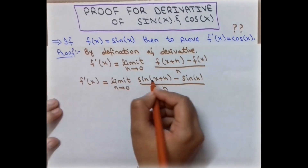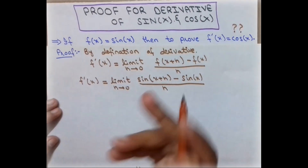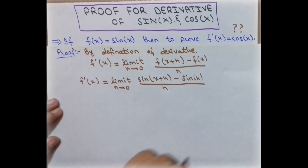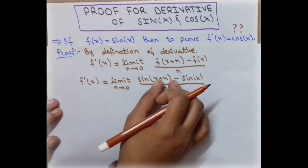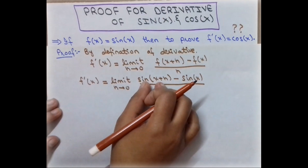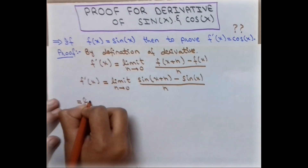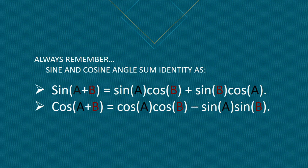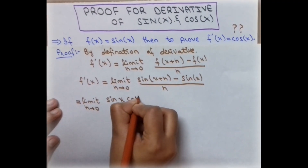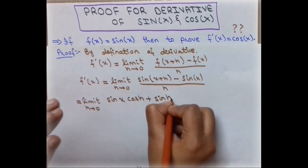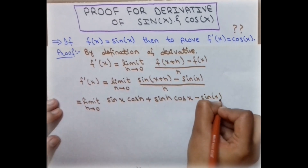We have two angles in addition form inside the sine, so we apply the sine angle sum identity, which says: sin(A+B) = sin(A)cos(B) + cos(A)sin(B). Applying this identity, we write the limit as h approaches zero of sin(x)cos(h) + sin(h)cos(x) minus sin(x), all divided by h.